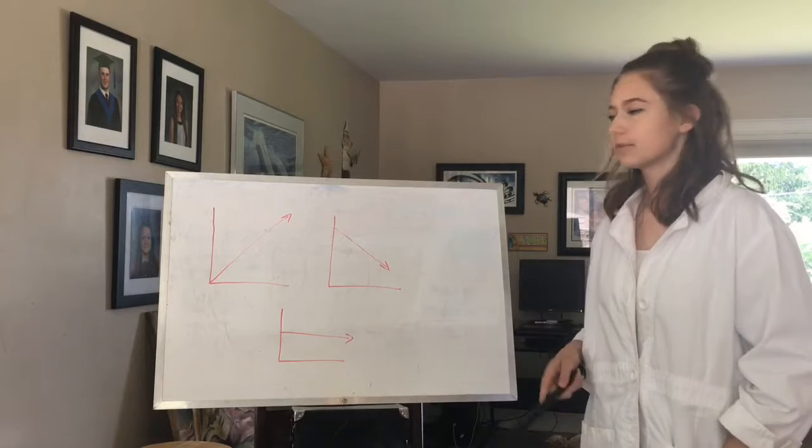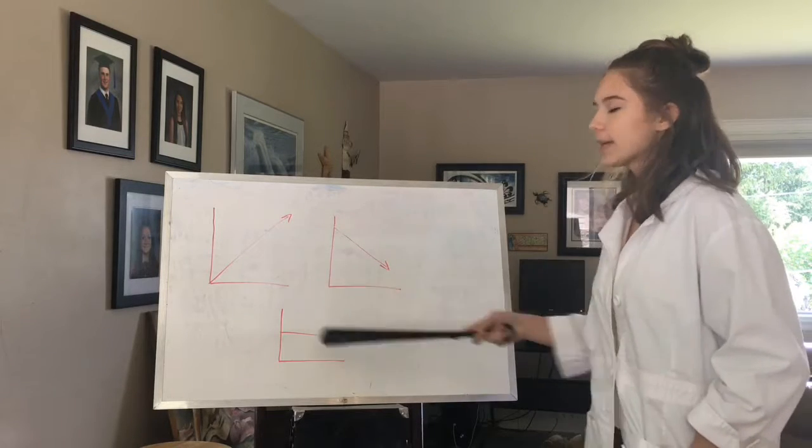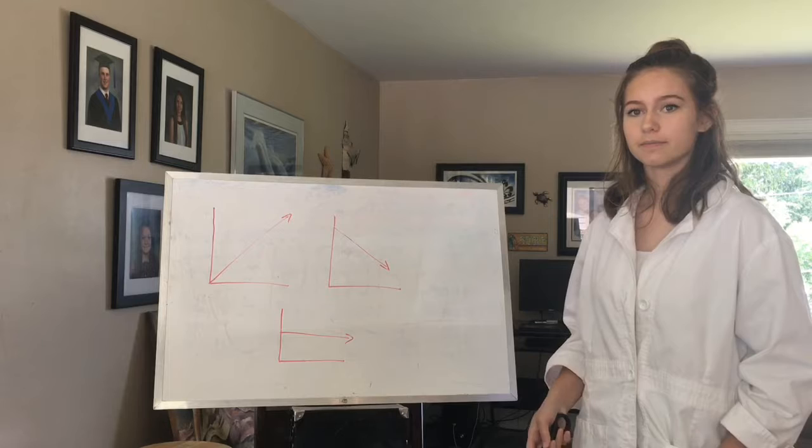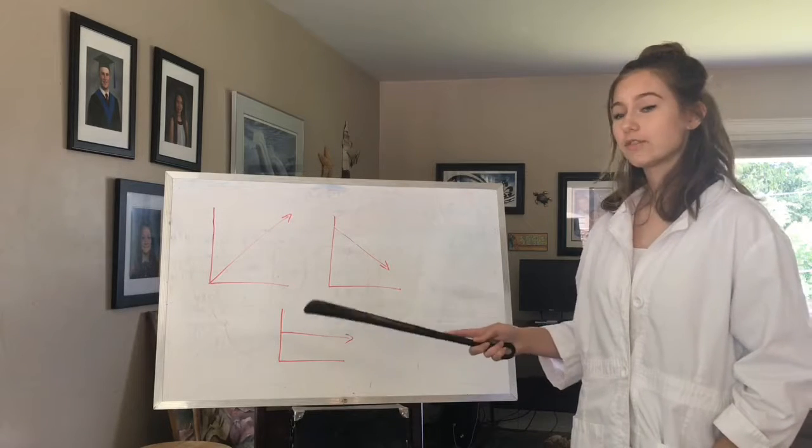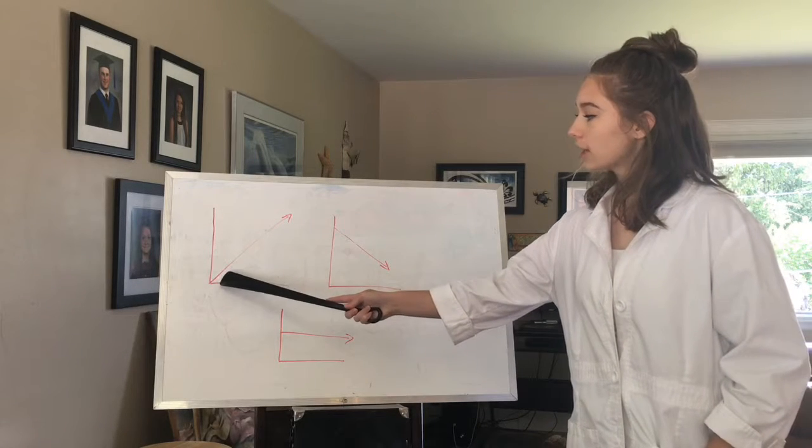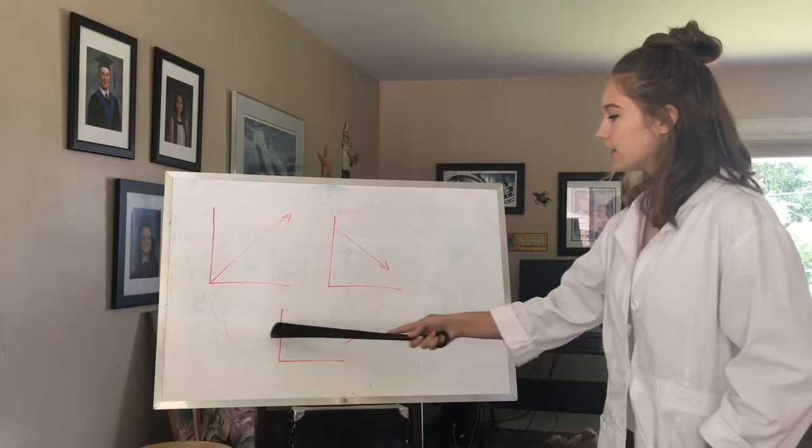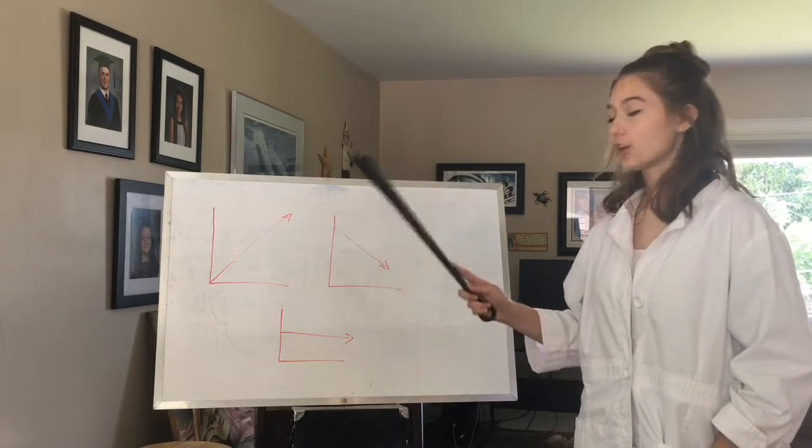So even though we only looked at one type of graph, this one, all three of these can resemble uniform motion. Why? Well, each of them show the object going in a specific direction and at a specific constant speed.